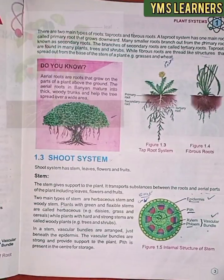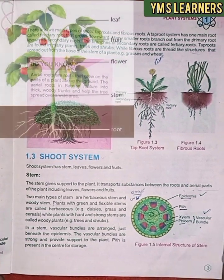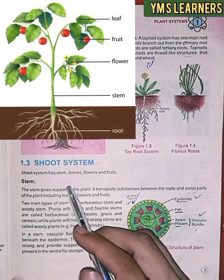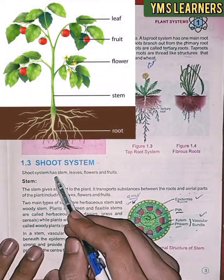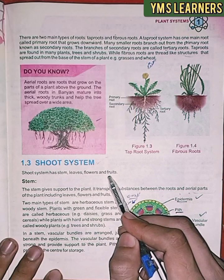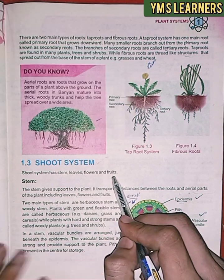The shoot system has stem, leaves, flowers, and fruits.